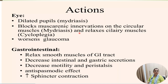Actions on the eye include dilation of the pupil — called mydriasis — by blocking muscarinic innervation of the circular muscle. Relaxation of the ciliary muscle causes cycloplegia, which is paralysis of accommodation, leading to photophobia and blurring of vision. Worsening of glaucoma can occur due to pupil dilation, as intraocular pressure is raised by blockage of the drainage pathway of the eye. In the gastrointestinal tract, there is relaxation of smooth muscle, decreased intestinal motility, decreased gastric secretion, decreased peristalsis, antispasmodic effect, and increased sphincter contraction.